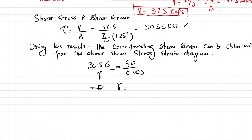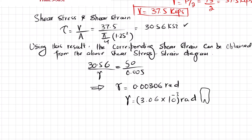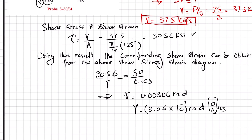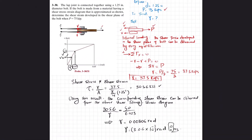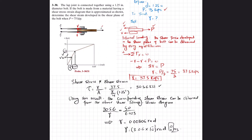From that equation, the shear strain comes out to be 0.00306 radians, or equivalently 3.06 × 10⁻³ radians. This is the answer to our question. I hope you enjoyed the video — please subscribe to my channel if you like my videos and support me as well. Thank you.